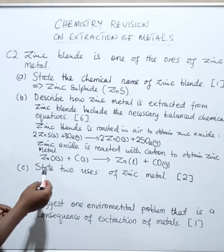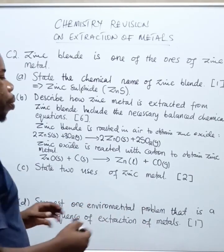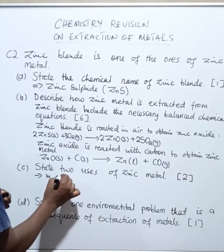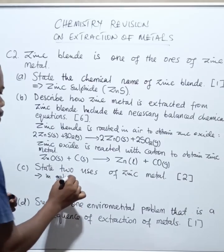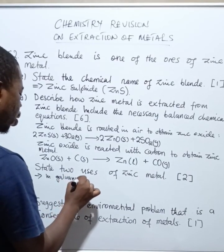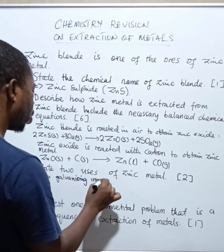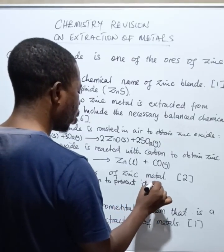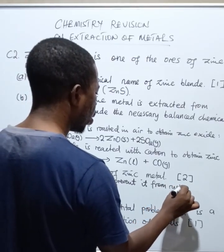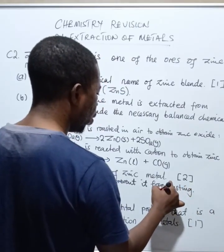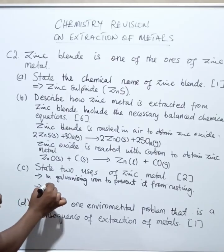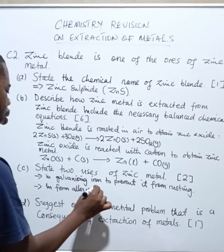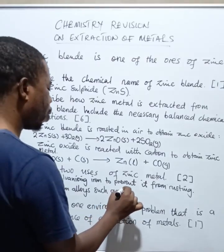The next question says: state two uses of zinc metal. Use number one is in galvanizing — coating iron to prevent rusting. The second use is in forming alloys such as brass.